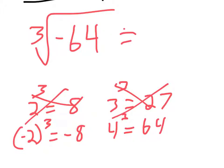We need negative 4 cubed, because that will make negative 64.